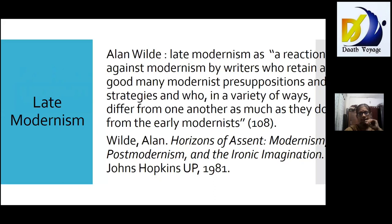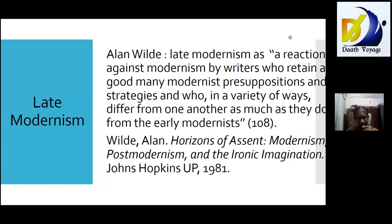I thought I would begin with a quote from Alan Wilde. I found his book Horizons of Essence: Modernism, Post-Modernism, and the Ironic Imagination very interesting. In it, he talks about late modernism as a reaction against modernism by writers who retain several of the modernist presumptions and strategies, but they differ from each other just as the early modernists did. So what is this reaction to modernism, and what features did these writers retain or reject?